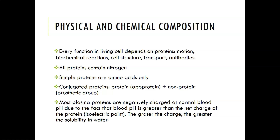Simple proteins are composed of amino acids only — there can be thousands or tens of thousands of amino acids. Conjugated proteins are proteins plus a non-protein component. The protein part is called the apoprotein and the non-protein part is called the prosthetic group, which could be a metal ion like magnesium or zinc, or another molecule like a lipid or carbohydrate. Lipoproteins are an example of a conjugated protein.